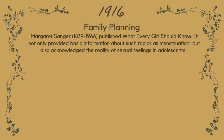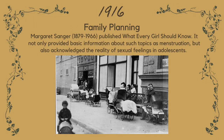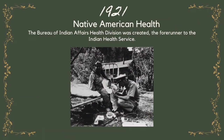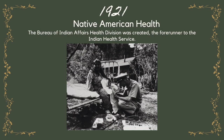1916 — Family Planning. In 1916, Margaret Sanger published What Every Girl Should Know. It not only provided basic information about such topics as menstruation, but also acknowledged the reality of sexual feelings in adolescence. 1921 — Native American Health. The Bureau of Indian Affairs Health Division was created, the forerunner to the Indian Health Service.